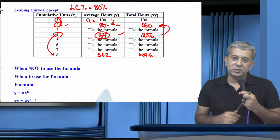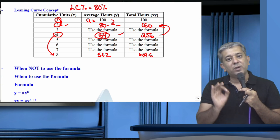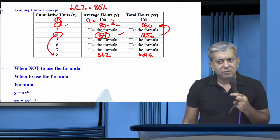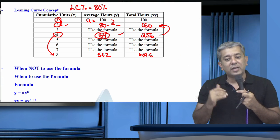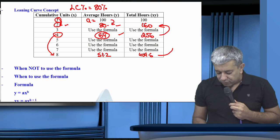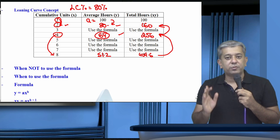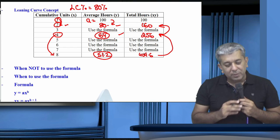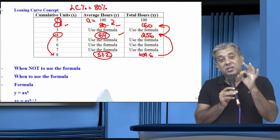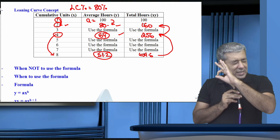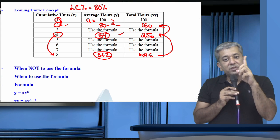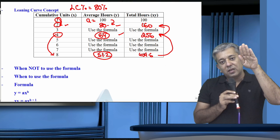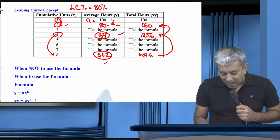So 409.6 means 8 units in all will take 409.6 hours. If asked for the 5th through 8th units, the answer is 409.6 − 256. And remember: 51.2 does NOT mean each of the first 8 units takes 51.2 hours. First unit still takes 100 hours, second still takes 60 hours — dheere dheere hours will fall. Yeh toh bas ek average ki story hai.